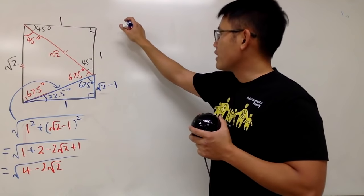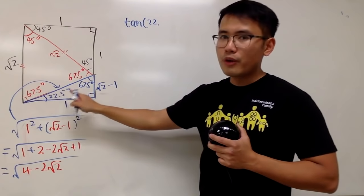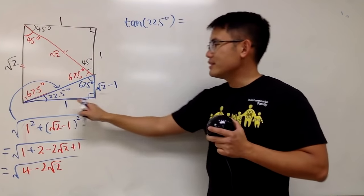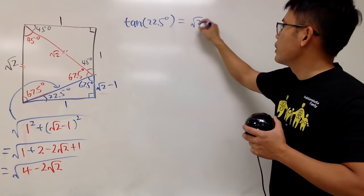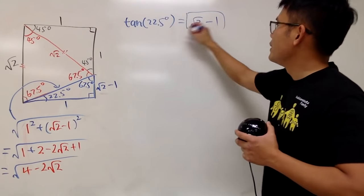Therefore, I will just put that down right here for you guys. Based on that, we know tangent of 22.5 degrees is nicely equal to this over that. And of course, that's just square root of 2 minus 1, right? Very, very nice.